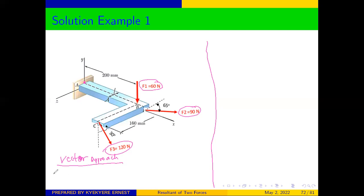We need to resolve all the forces into vector form. Let's start with F1. You can see that F1 only has a Y component — it is acting in the Y axis. Looking at the direction, it is coming down. Y up is positive, so since the force is coming down, F1 is going to be negative 62j Newtons.